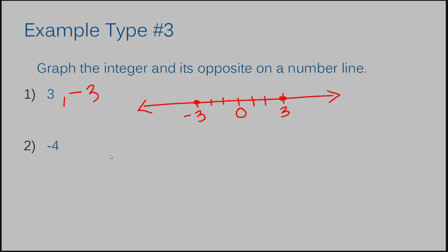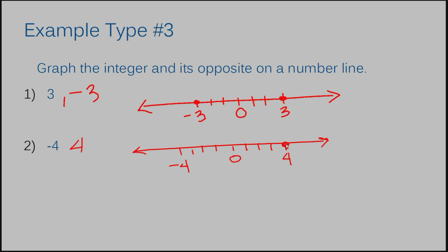Example number two has a four. The opposite of negative four is going to be positive four. I'm going to draw another number line starting with zero. My negative four is going to be over on the left side — one, two, three, four. And my positive four is going to be on the right side — one, two, three, four. I'll draw a dot at each point. I have graphed negative four and four.